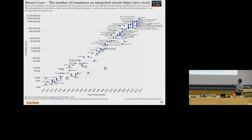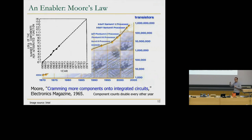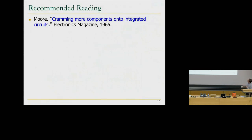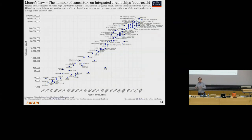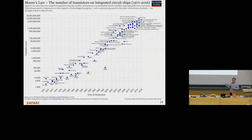People say Moore's Law is going to end or has already ended. Clearly, the law itself isn't ending because people are putting more and more components on chip — it's become more difficult, but there's a limit at some point. Once you reduce transistor size enough, you might not even be able to pass an electron through — if you cannot pass an electron, how are you going to move charge in the transistor? But we probably haven't reached that limit yet.